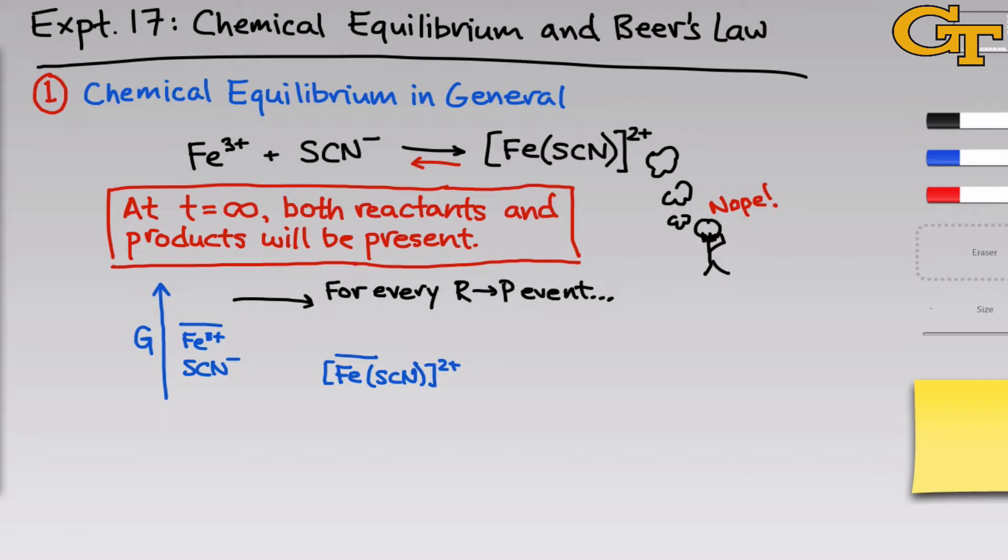Once we've reached the state of chemical equilibrium, it's really important to see that for every event going from the reactants to the products, for every R to P event, there is a corresponding event in the reverse direction that converts products back to starting materials. For every conversion of a reactant to product, there is a corresponding product to reactant event.